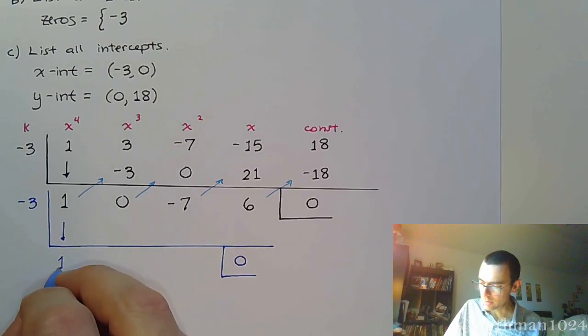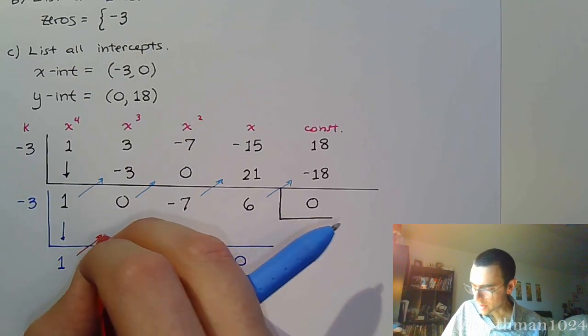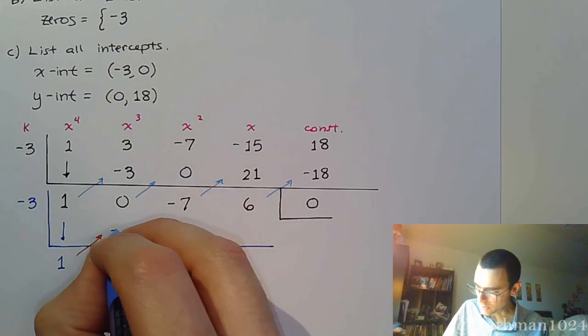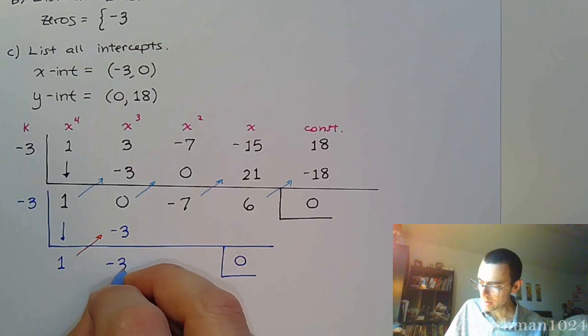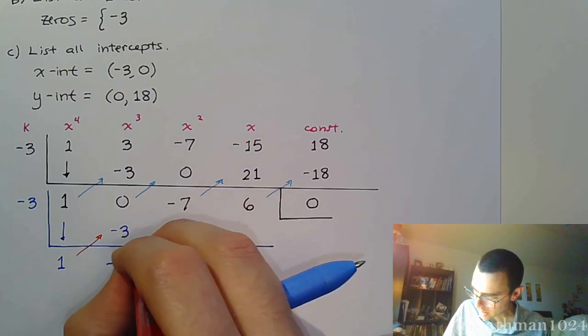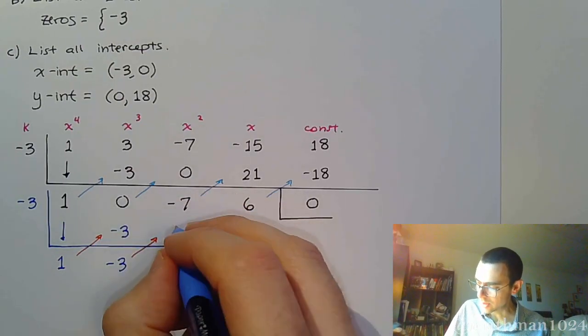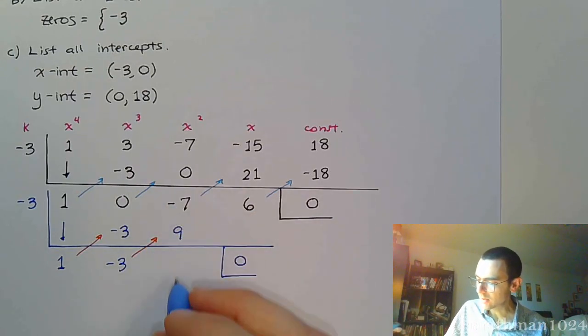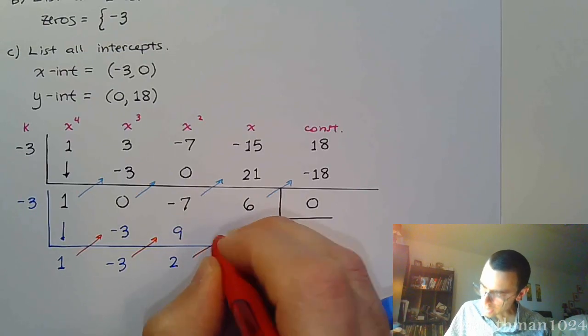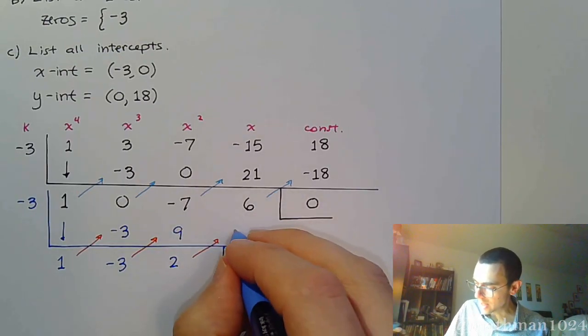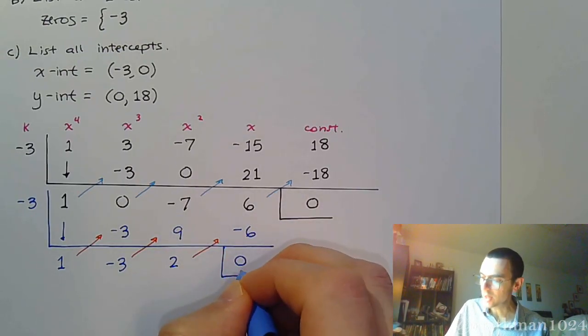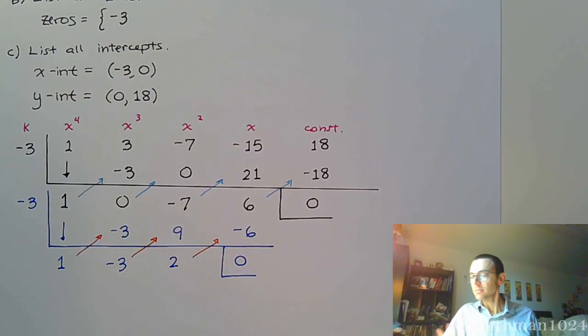So bring down the one. Times negative three gives me negative three. Combine to give me negative three. This multiplies to nine. Negative seven and nine is positive two. Multiply times negative three, we get negative six, and yes, there is my remainder of zero. Exactly what we were supposed to have. Things work out splendidly for us, right?